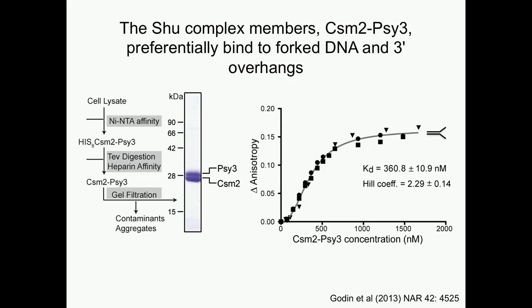To determine where the SHU complex may be functioning during homologous recombination, we first asked whether the SHU complex could bind to specific DNA substrates. We purified two of the SHU complex components — the DNA binding components CSM2 and PSY3 — and by fluorescence anisotropy, we find that they preferentially bind to fork DNA substrates and also to three-prime DNA overhangs. We were excited about these results because these are DNA structures utilized during homologous recombination.